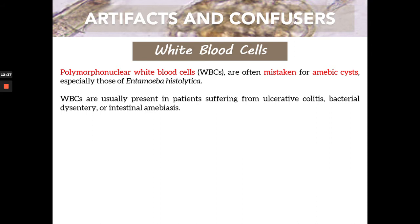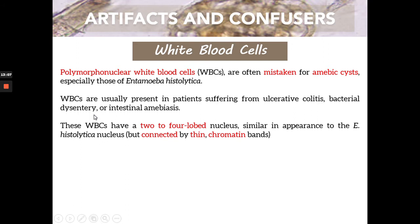WBCs are usually present in patients suffering from ulcerative colitis, bacterial dysentery, or intestinal amoebic infections. Because these are infections, your WBCs will be increased and can also be recovered in your stool. Their appearance features a 2-to-4-lobed nucleus, similar in appearance to the Entamoeba histolytica nucleus, but the lobes are connected by thin chromatin bands.